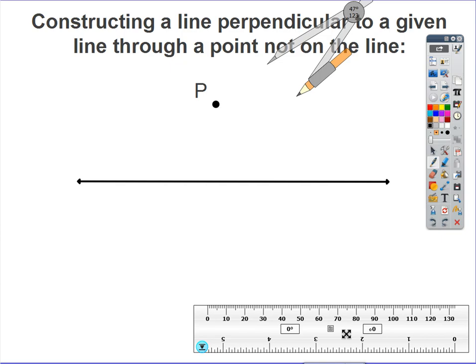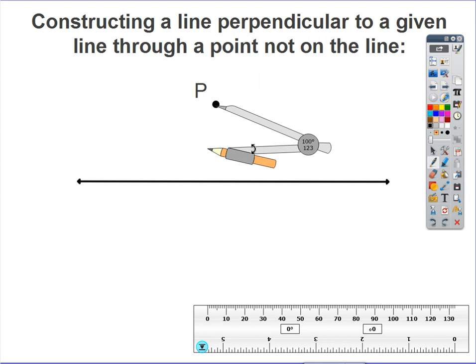The first step is using your compass tool. You're going to place the point of your compass on point P and sweep an arc using your compass that will intersect the given line twice. Right now, if I sweep an arc, I'm not going to intersect at all. So I want to expand my compass to a point where when I would sweep this arc, it would intersect twice.